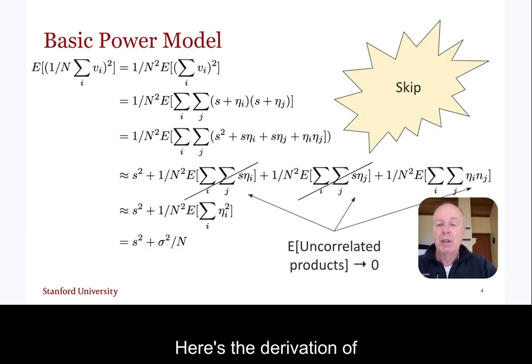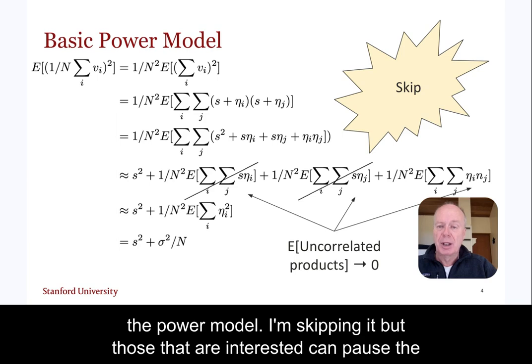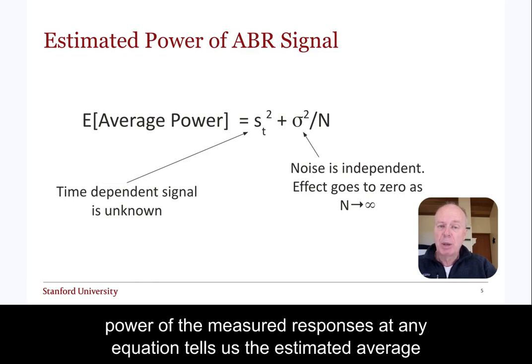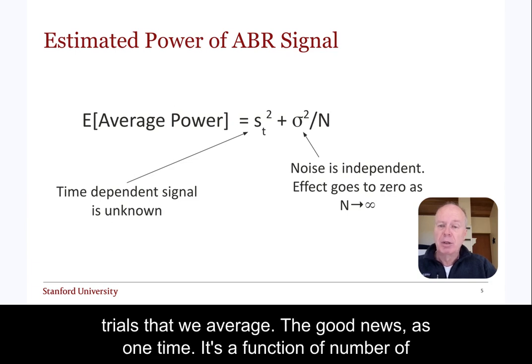Here's the derivation of the power model. I'm skipping it, but those that are interested can pause the video. This is the conclusion. This equation tells us the estimated average power of the measured responses at any one time. It's a function of the number of trials that we average.